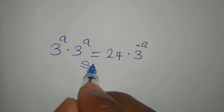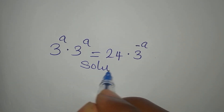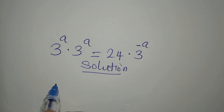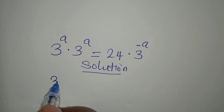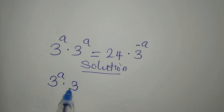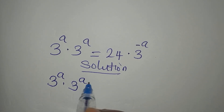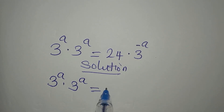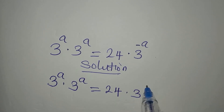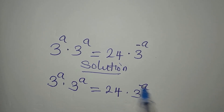Hello everyone, let's provide the solution to this problem. We have 3 to the power of a, multiplied by 3 to the power of a, equals 24 multiplied by 3 to the power of negative a.